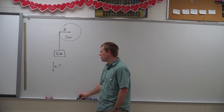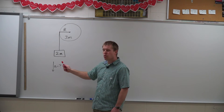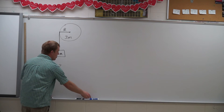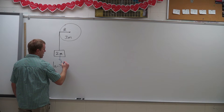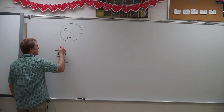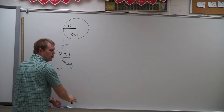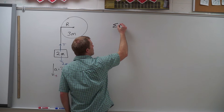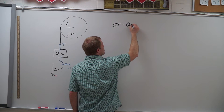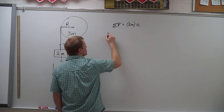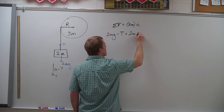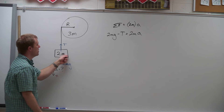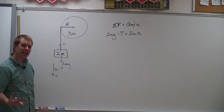How we set up these problems is similar to how we set up multiple mass problems before. We need to draw the direction of acceleration — that's going to be my positive direction. What forces are acting on my block? It has a mass of 2m, so I have 2mg acting down and tension acting up. Down is my positive direction, so the sum of the forces equals mass times acceleration: 2mg minus tension equals 2ma. But I have two unknowns, so I need to get a second equation.